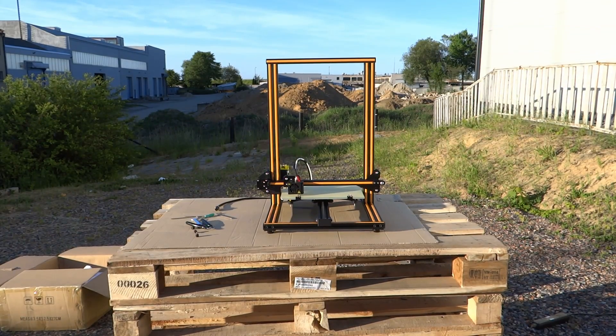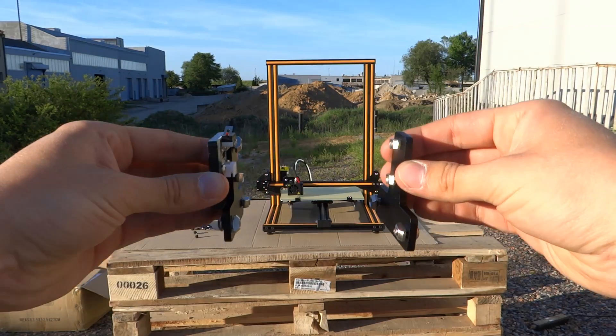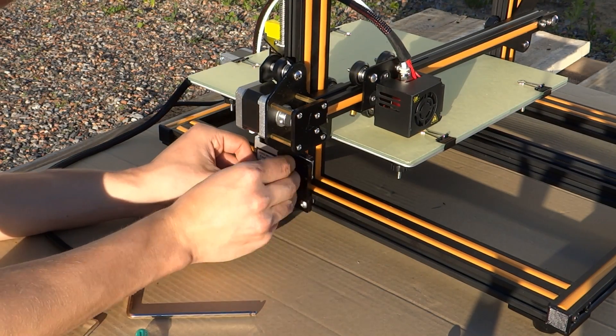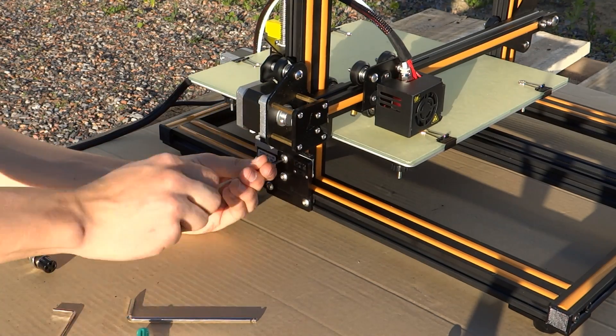In the cardboard box you can find two black elements. We need those to make the frame more rigid. We'll mount them on the sides as shown. One of them has mounted end stop on it. Make sure to mount it on the extruder side.